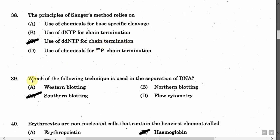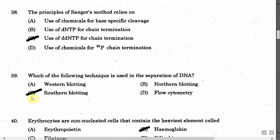The next question is: Which of the following techniques is used in the separation of DNA? Option A: Western blotting. Option B: Northern blotting. Option C: Southern blotting. Option D: Flow cytometry. The correct answer is Option C, that is Southern blotting.